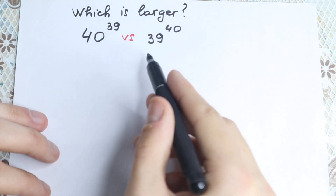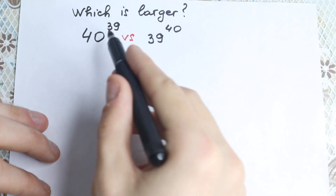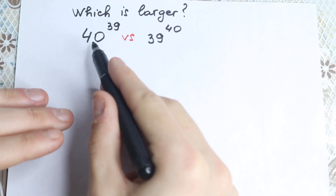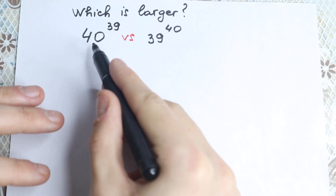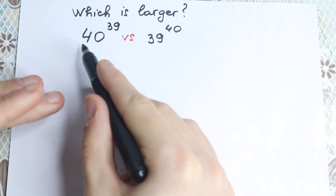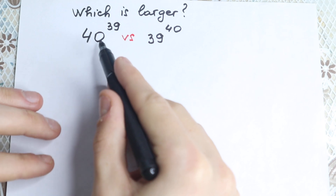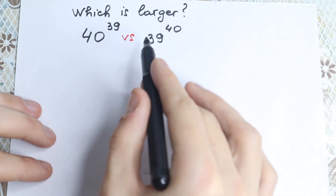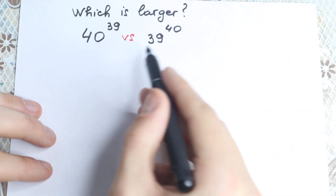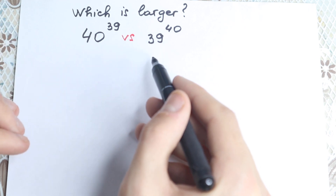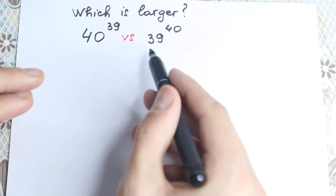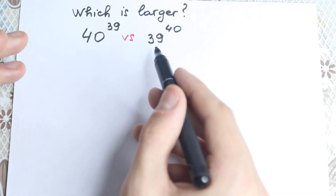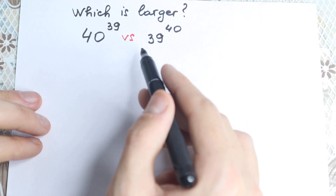So how do we solve this interesting question? As you can see, 40 is a good number — we can write it as 2 times 20, or 4 times 10, so we can easily express it in other ways. But 39 is not a good number. We can write it only as 3 times 13, which is not good for us, because 13 is a prime number. So this is a bad situation with 39.